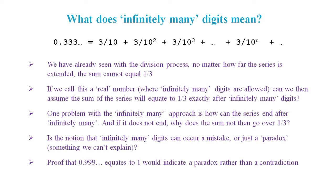Like 0.3 recurring, 0.9 recurring is also supposed to contain infinitely many digits. And so if we could prove mathematically that 0.9 recurring does equate to 1, then this would suggest that infinitely many does have a real meaning.